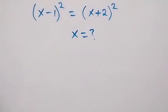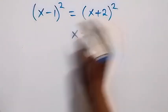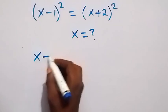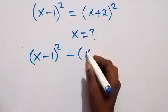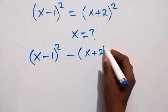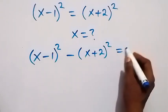Hello, you are welcome. How to solve this nice algebra problem: we have (x-1)² equals (x+2)². From here we can bring this one here and it becomes (x-1)² minus (x+2)² which is equal to 0.